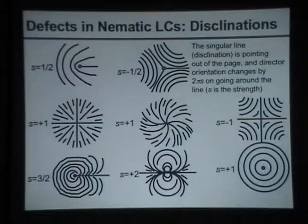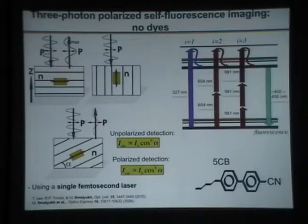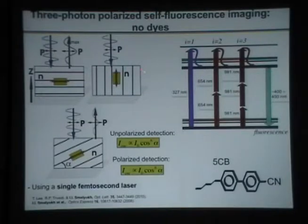For example, the director orientation changes by 180 degrees as you go around the defect full circle, so the strength of this disclination line is +1/2. In the case of the other one it is −1/2 because the director rotates in the opposite direction. In my talk, I will extensively use different two-dimensional optical imaging techniques; during my previous lectures I already discussed the different ways of imaging molecular alignment in liquid crystals. In this particular case I will use three-photon polarized-cell fluorescence imaging.